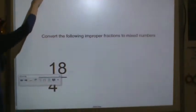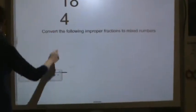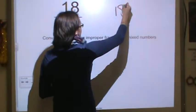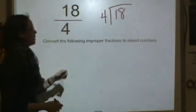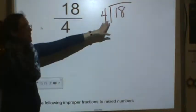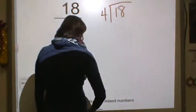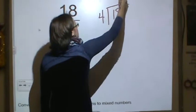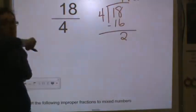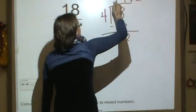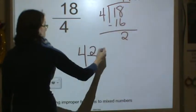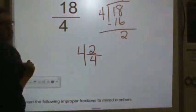So here we have our fraction. We are going to convert this. So we have 18 fourths. So we are going to divide 18 into equal groups of 4 because 4 is the size of our group. So how many 4s go into 18? 4. 4 times 4 is 16. Subtract. And I have a remainder of 2. So remember our directions. The answer to your division problem becomes the whole number. The remainder becomes the new numerator. Here's the remainder. And the denominator stays the same.